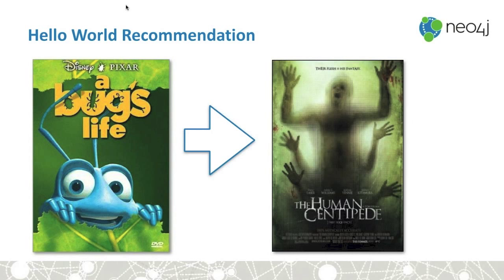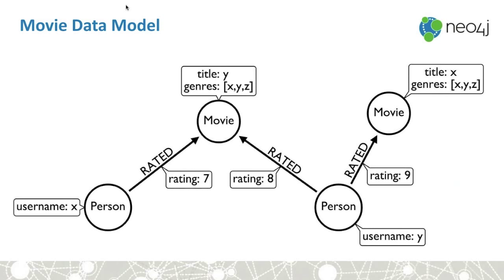So how do we do this? We have a data model with people (users in our system), movies with titles and genres — a movie could be comedy, action, cartoon, or a combination. Usually movies have multiple genres. Our people are going to rate these movies and give them a score from 1 to 10 — 10 if they loved it, 1 if they hated it, or simply no rating if they haven't seen it. That's all we need to build this.